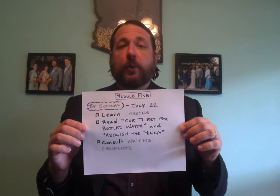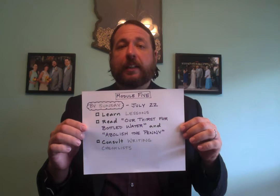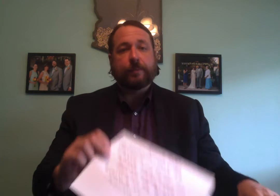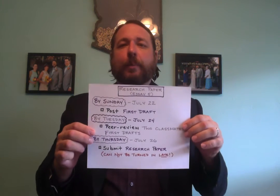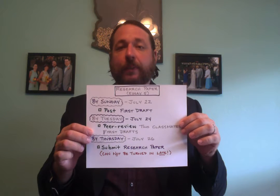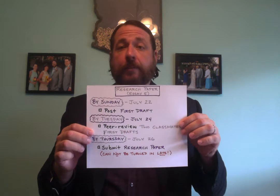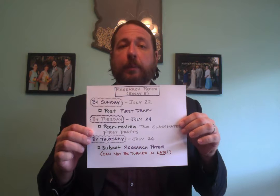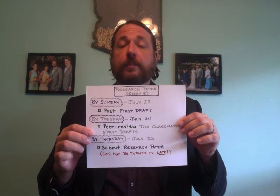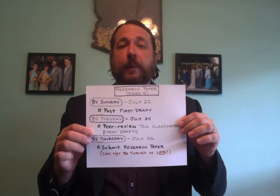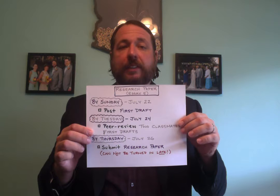Third, consult the four writing checklists created by Marsha Muth. Fourth, post your first draft of your entire research paper, Essay 5, for peer review. By 11:55 p.m. on Tuesday, July 24th, you need to accomplish a fifth academic task.